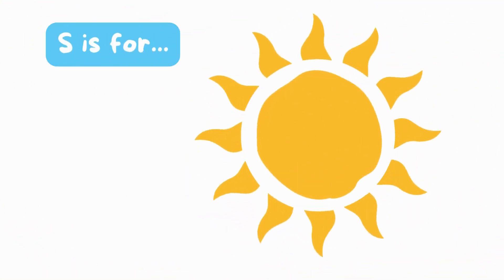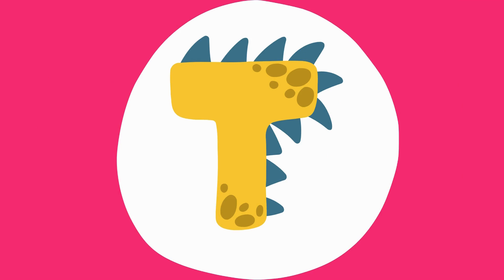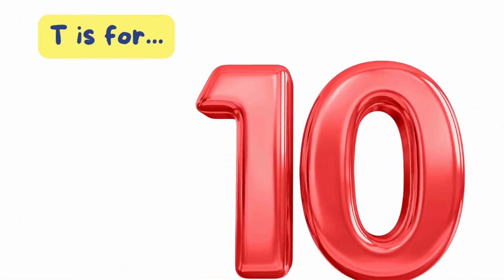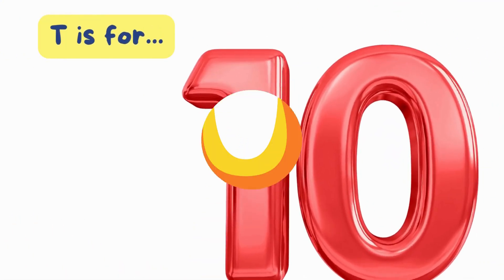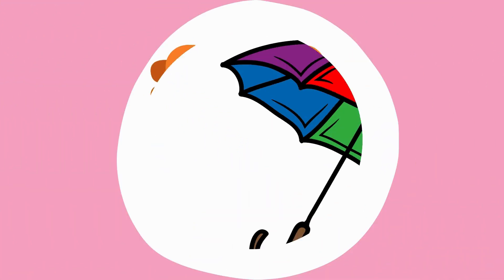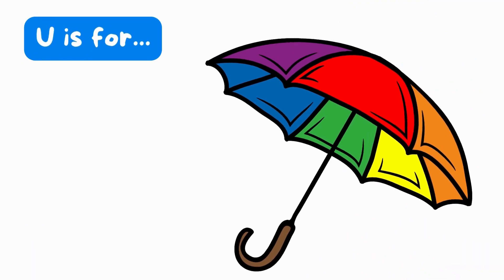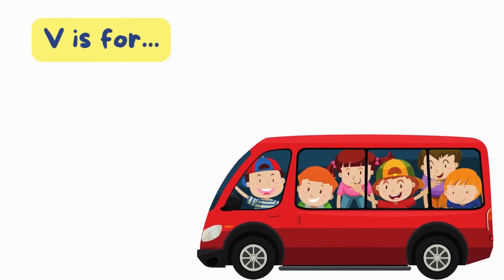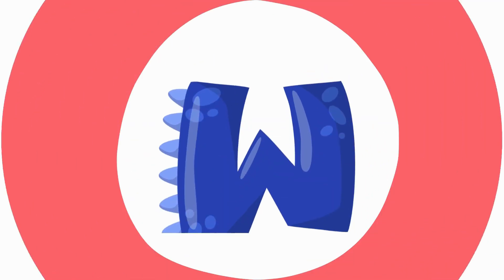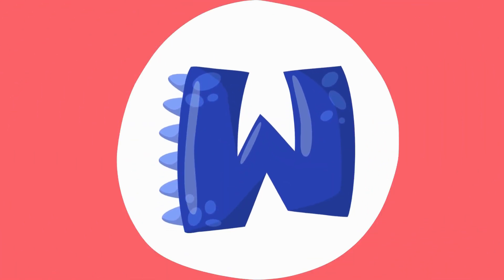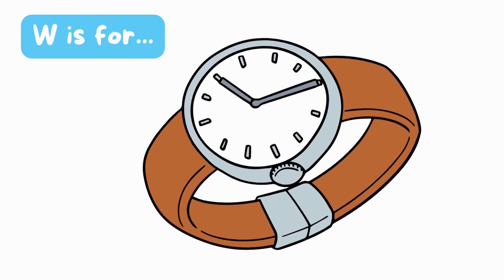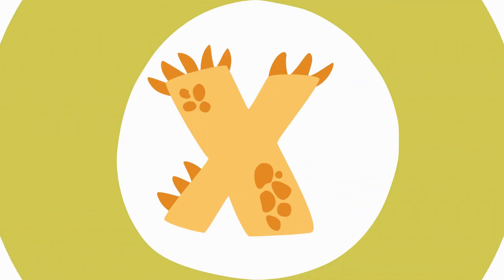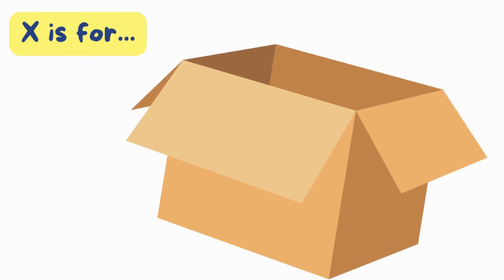R is for ring. R, ring. S is for sun. S, sun. T is for ten. T, T, ten. U is for umbrella. U, U, umbrella. V is for van. V, V, van. W is for watch. W, watch. X is for box. X, X, box.